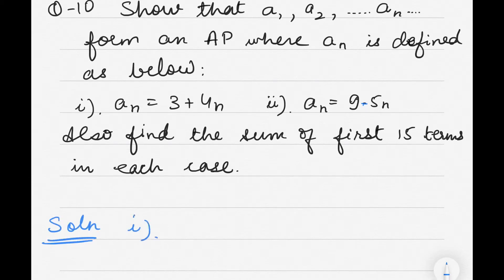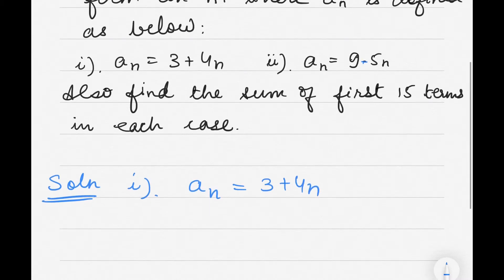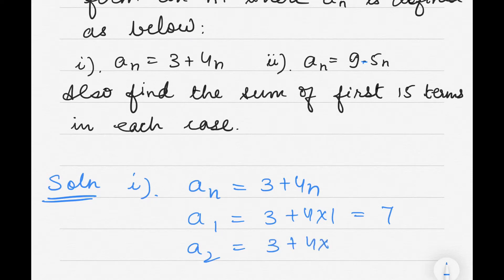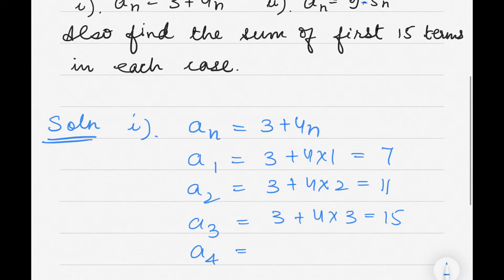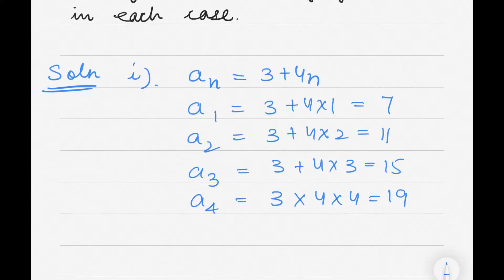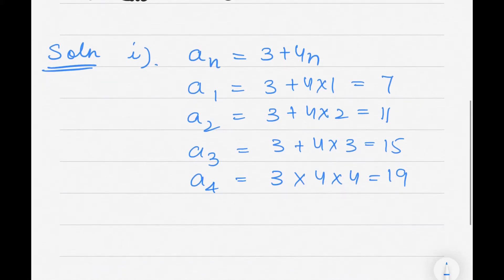First case: an is equal to 3 plus 4n. Substituting values — a1 = 3 + 4×1 = 7; a2 = 3 + 4×2 = 11; a3 = 3 + 4×3 = 15; a4 = 3 + 4×4 = 19. Now I have to check whether these four terms form an AP by verifying the common difference.